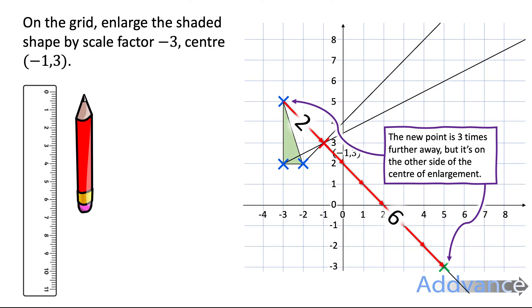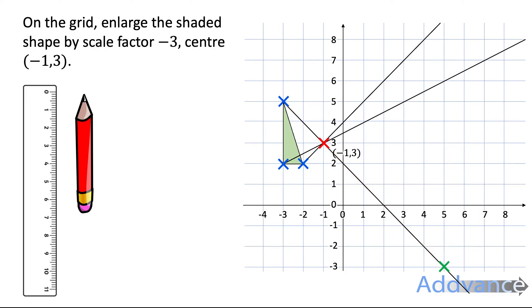So it's moved three times further away and it's in the opposite direction. So the minus makes it the opposite side. The three makes it three times further away. Now we're going to do the same with the other three corners. And we can connect up those three corners and draw our new shape.